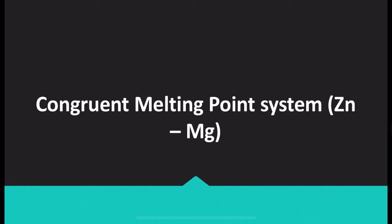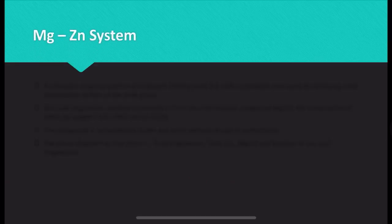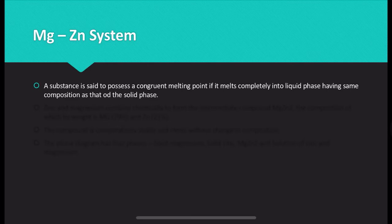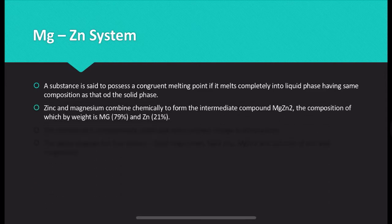Here we are going to discuss the congruent melting point system, that is the Zn-Mg system. A substance is said to possess a congruent melting point if it melts completely into a liquid phase having the same composition as the solid phase. Zinc and magnesium combine chemically to form an intermediate compound called MgZn₂. The composition by weight is: Mg is 79% and Zn is 21%.